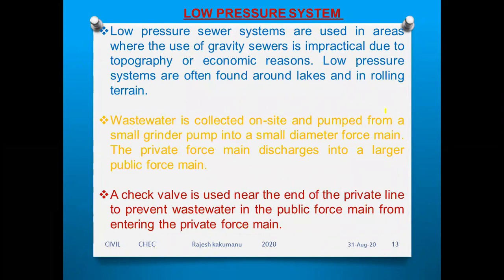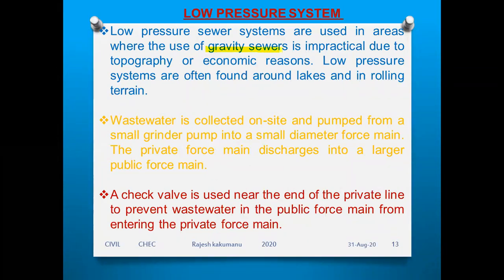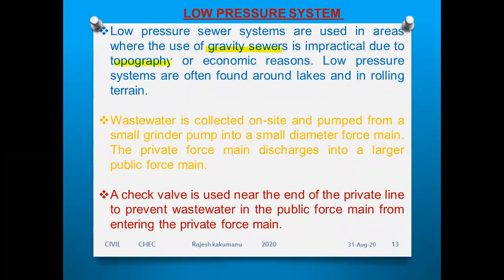The second type is the low pressure system. Low pressure systems are used in areas where the use of gravity sewers is a problem and impractical due to topography — such as hilly areas, rocky areas, or hill stations — and also for economic reasons.